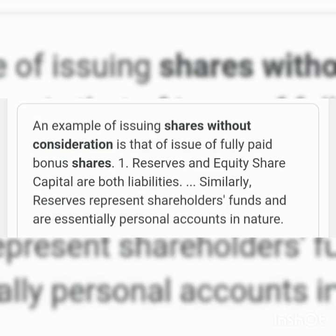These shares can be issued either at par or at a premium, and the number of shares to be issued will depend upon the price at which the shares are issued and the amount payable to the vendor. To solve this type of problem, we first want to calculate the number of shares issued by the company for making the payment to the vendor. The equation is: Number of shares = Amount payable to vendor ÷ Issue price. The issue price may be at par or at a premium.